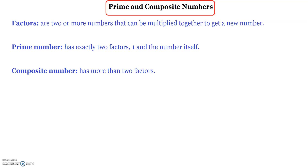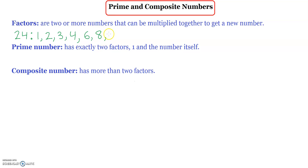Factors are two or more numbers that can be multiplied together to get a new number. For example, let's write the factors of 24: 1, 2, 3, 4, 6, 8, 12, and 24.